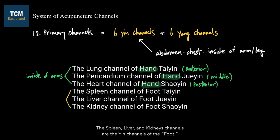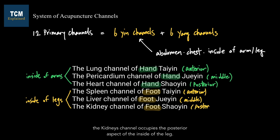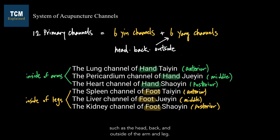The spleen, liver, and kidney channels are the yin channels of the foot. Since they are all yin channels, they are located on the inside of the legs. The spleen channel occupies the anterior aspect, the liver channel occupies the middle aspect, and the kidney channel occupies the posterior aspect of the inside of the leg. On the other hand, six yang channels traverse the yang part of the body such as the head, back, and outside of the arm and leg.